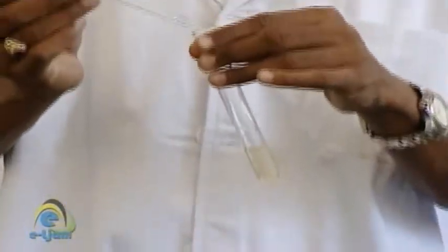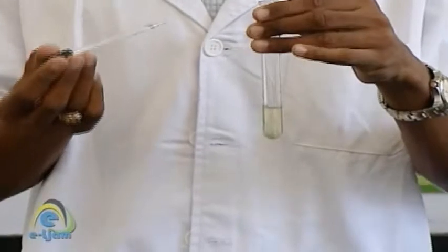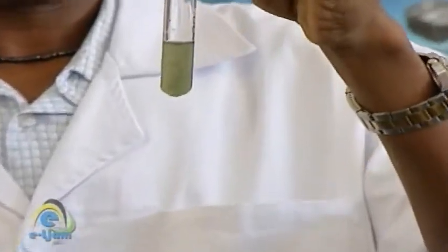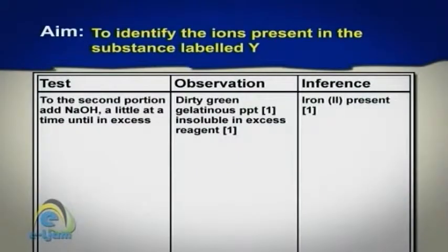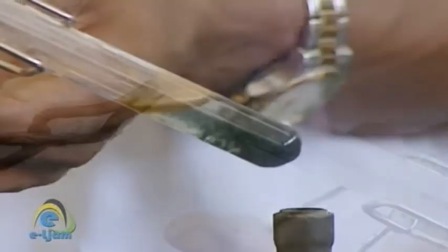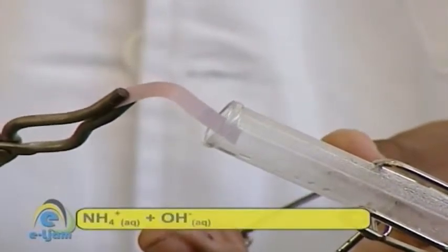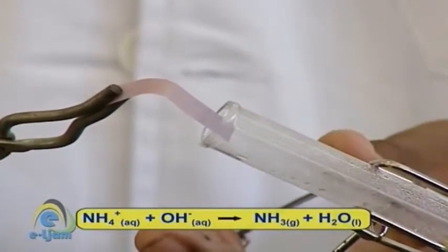Add sodium hydroxide a little at a time until in excess. Observation: dirty green gelatinous precipitate, insoluble in excess reagent. Inference: iron(II) present. Test: warm the mixture. Observation: gas given off turns damp red litmus blue and forms dense white fumes with hydrogen chloride gas. Inference: ammonia gas given off; ammonium ion confirmed.